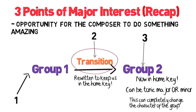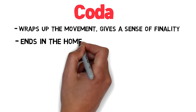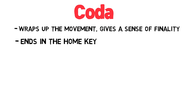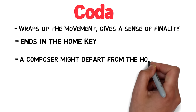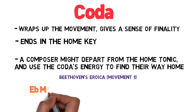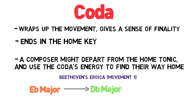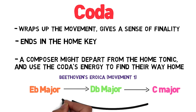Finally there's the coda, which gives a solid ending to the piece. There are many possibilities and the objective is to wrap up the movement and give it a sense of finality, ending in the home key. Mozart keeps it fairly simple and dramatically effective. Sometimes a composer might decide to depart from the home tonic and use the energy of the coda to find their way back again. Here's my favourite example of that, where Beethoven is in his home key at the end of the recap, and then shoots himself in the foot — and then he shoots himself again, apparently with a machine gun — and then he has to find his way back home again.